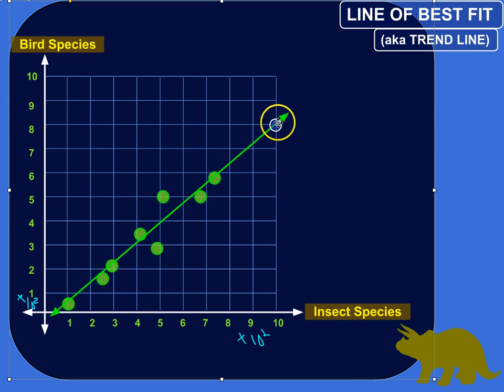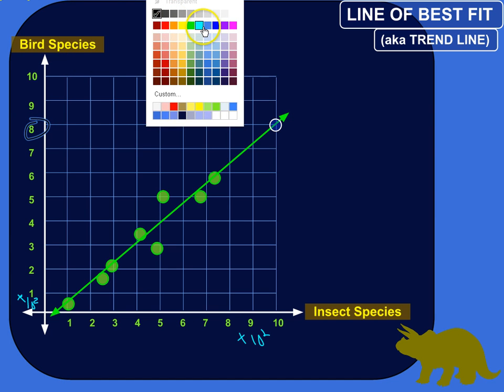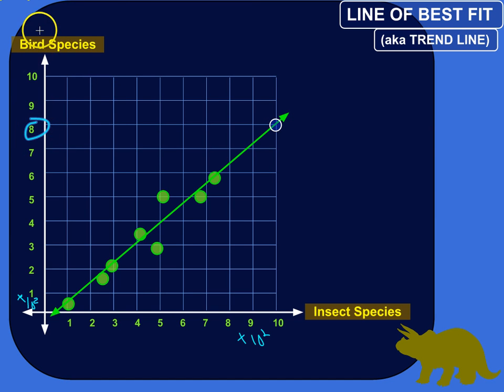So, where does that connect? According to this line of best fit, I could expect to find approximately 800 or so different kinds of birds. Different bird species.